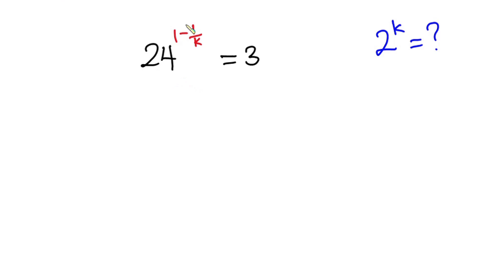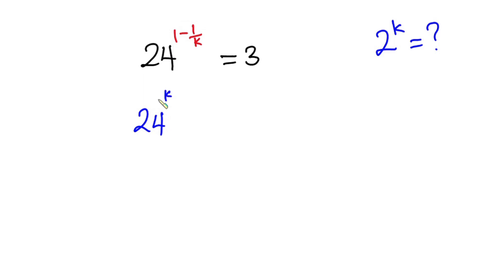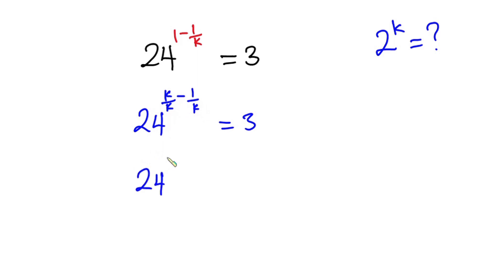First of all, I'll combine this exponent, and to do that they need to have the same denominator. So I'll rewrite this exponent as k/k — which is the 1 — then minus 1/k, and this is equal to 3. Since they now have the same denominator, we can easily combine them: 24 to the power (k minus 1) over k, equal to 3.